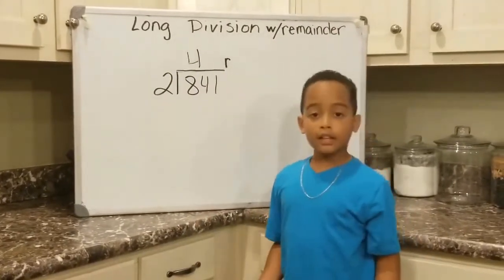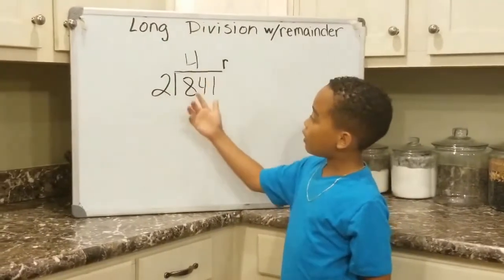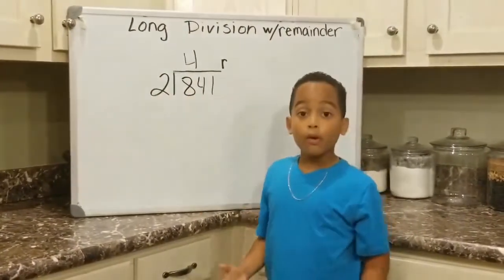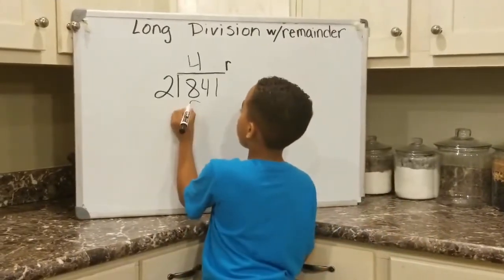OK, the next step is to multiply. Multiply 4 with 2. What's the answer? 8. We're going to write the 8 below the other 8.